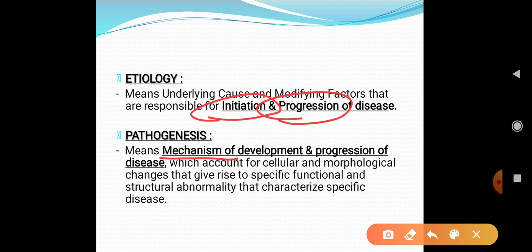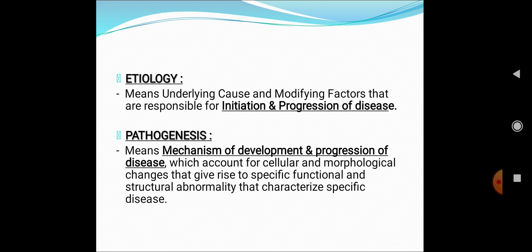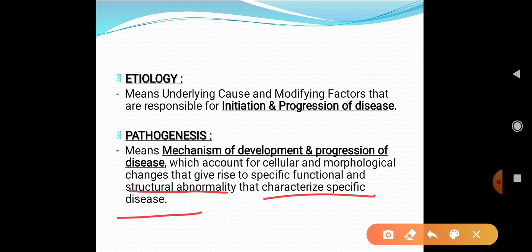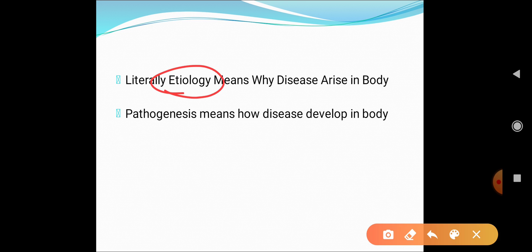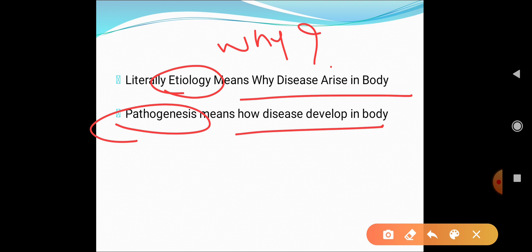Pathogenesis means the mechanism of development and progression of disease. It is related to the mechanism that accounts for the cellular and morphological changes giving rise to specific functional and structural abnormalities. Literally: etiology is about WHY the disease arises in the body, and pathogenesis is about HOW the disease develops in the body.